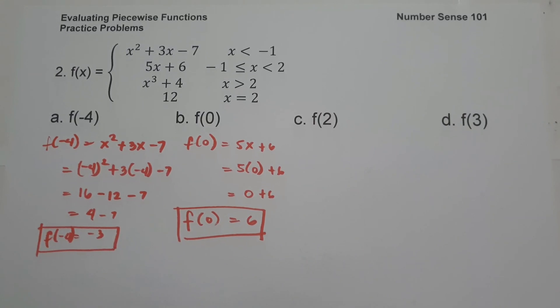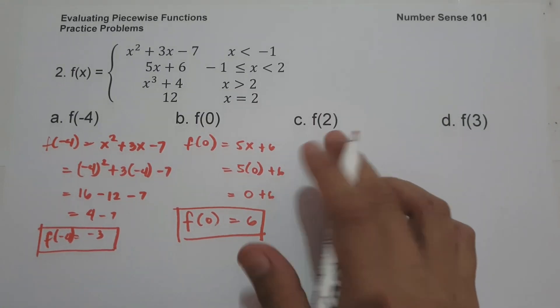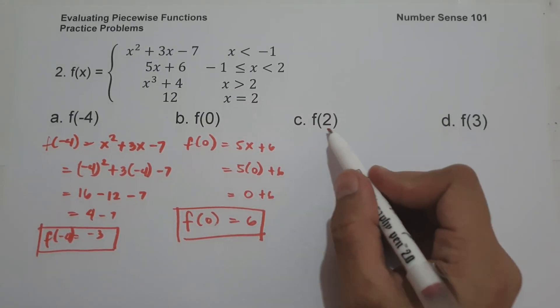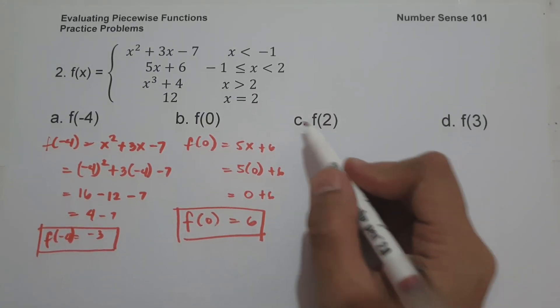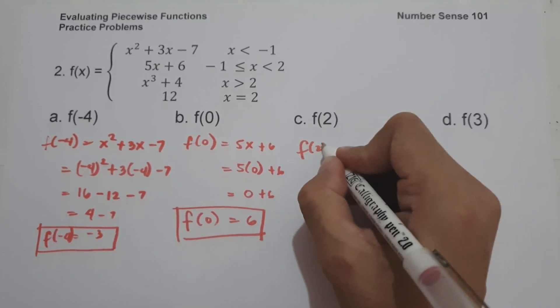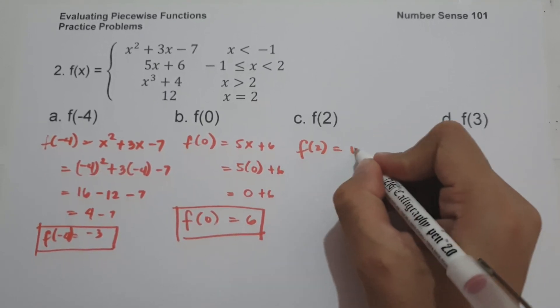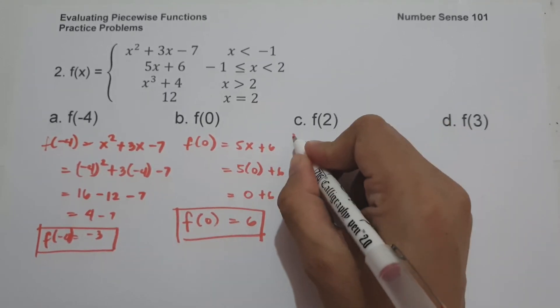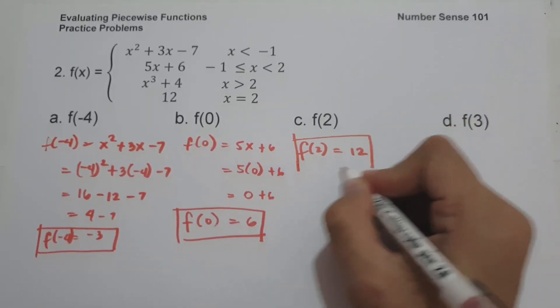What about letter C — f of 2? If x is equal to 2, then f of 2 will be equal to 12. And this will be our answer.